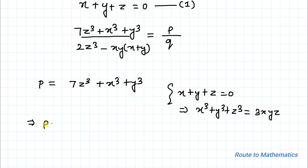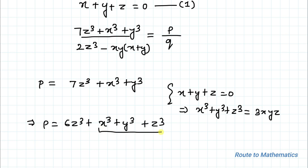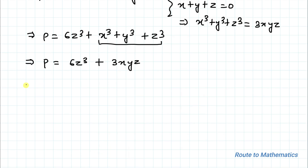This implies we can write P = 6z³ + (x³ + y³ + z³). Here we have x³ + y³ + z³, so let's substitute 3xyz. We get P = 6z³ + 3xyz. Taking 3 as common, P = 3(2z³ + xyz).